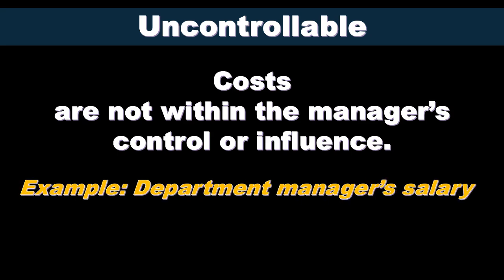A common example of an uncontrollable cost is the department manager's salary. If we're running a department, we have control over costs such as the supplies consumed within that department. But our own salary is not something we have control over — we can't change our own salary. That's going to be someone above us who has control over our own salary.